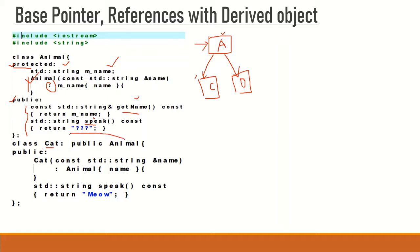The Cat class is inherited from Animal in public mode of inheritance. In public mode, protected data members of the base class remain protected in the derived class as well. So the Animal constructor, which is part of the Cat class, will also act as a protected member inside the Cat class. From the Cat constructor, we are calling the Animal class constructor and passing the name of the animal. The Cat class also has one member function that returns how a cat normally speaks — it returns a string literal value.